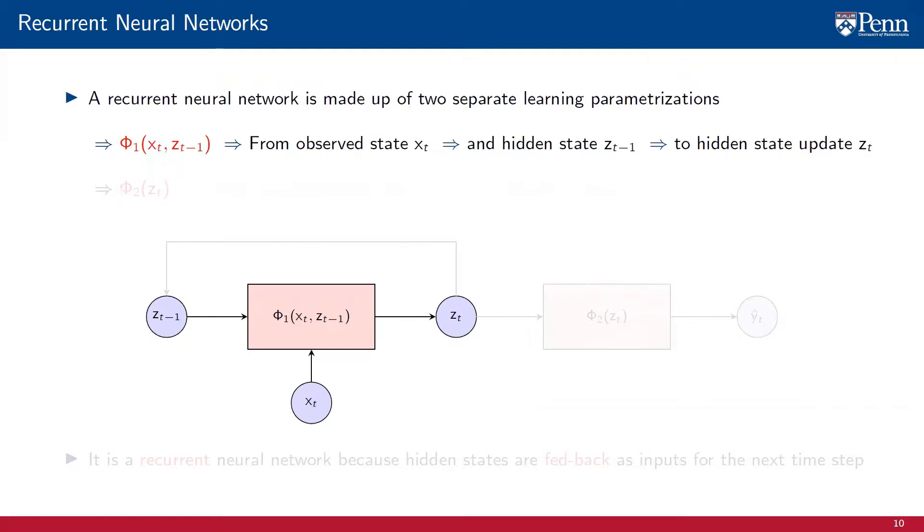Observe that we are using zt to denote the internal state of the RNN. This state is not the same as the internal state of the hidden Markov process. It would be more accurate to use z hat t to denote the internal state of the RNN, but this complicates notation unnecessarily.